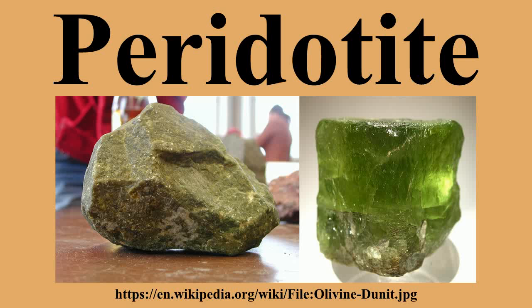Minerals that may be present in lesser abundance in pyroxenites include olivine, garnet, plagioclase, amphibole, and spinel. Peridotite is the dominant rock of the earth's mantle above a depth of about 400 km; below that depth, olivine is converted to the higher pressure mineral wadsleyite.